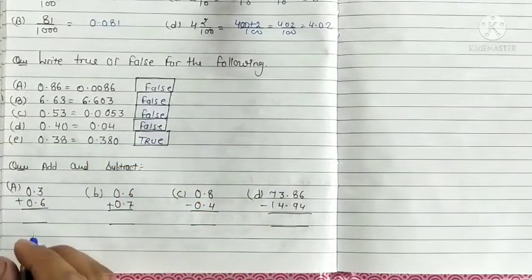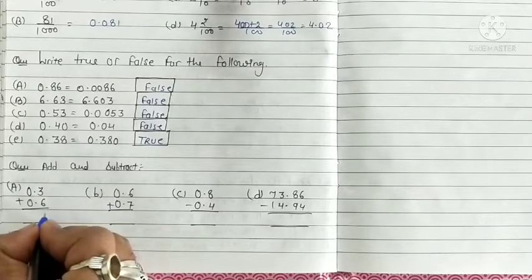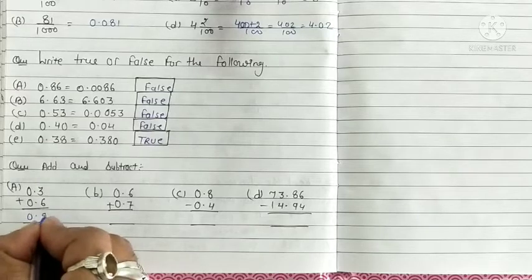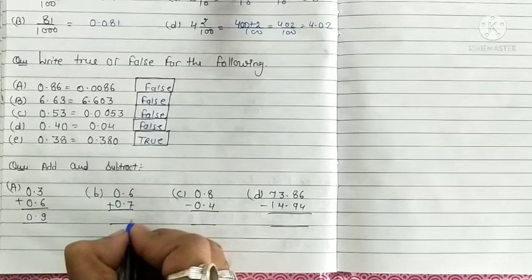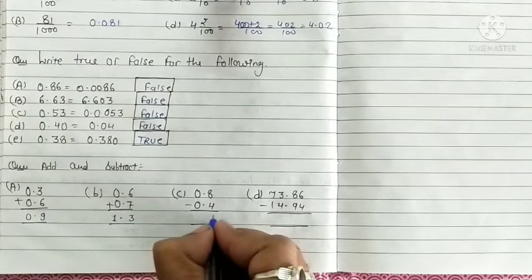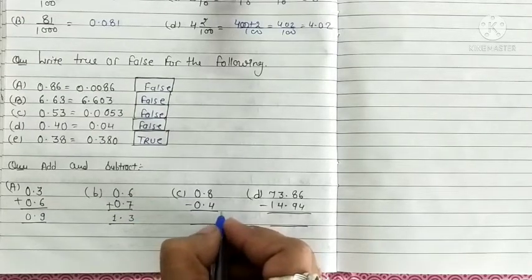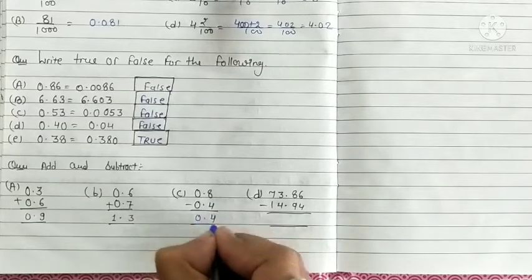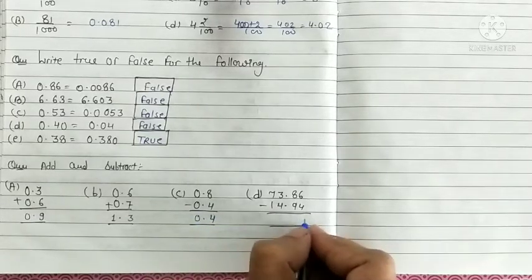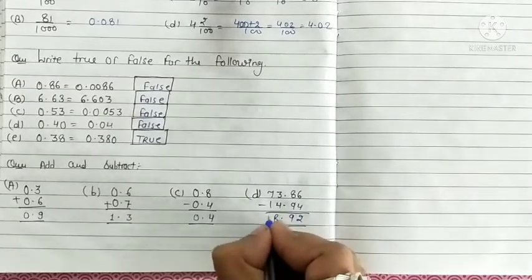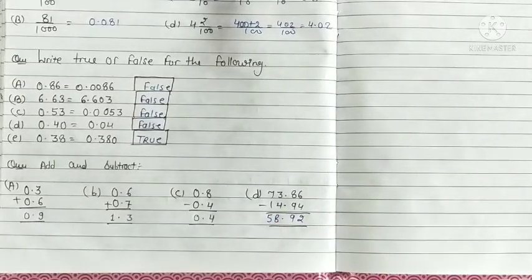Now next, add and subtract. 6 plus 3, 9. So 0.9. 6 plus 7, 13, then carry 1, 1.3. 8 plus 4. Now subtract, 8 minus 4, 4, 0.4. Then we will subtract this. So we will get 2, 9, 8 and 5, 58.92.